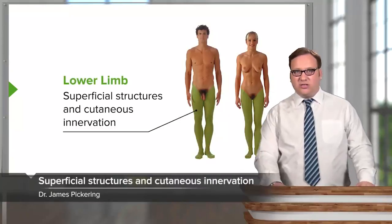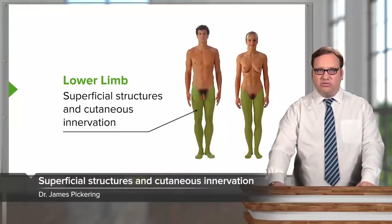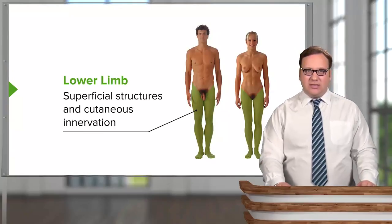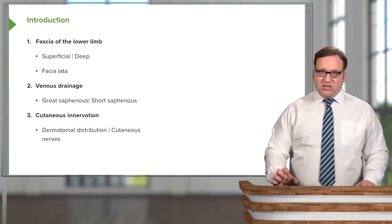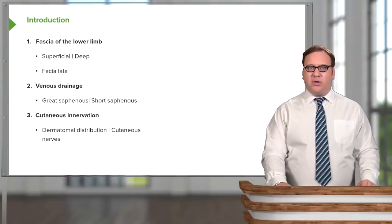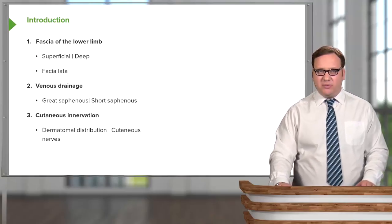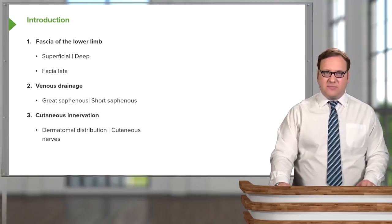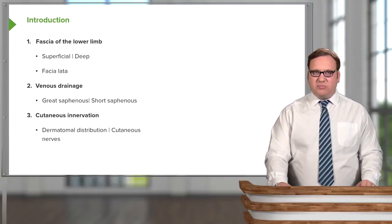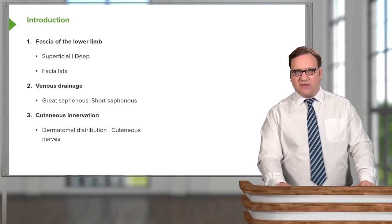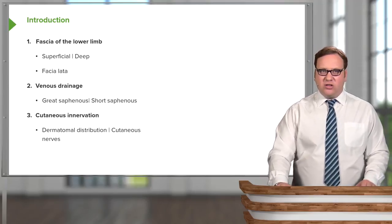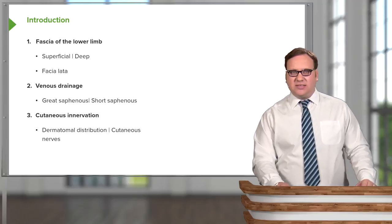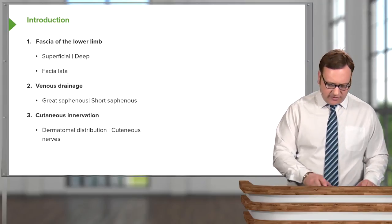In this lecture we're going to look at the superficial structures and cutaneous innervation of the lower limb. We're going to look at the fascia of the lower limb, both the superficial and deep, quite briefly, but we'll look specifically at the fascia later. We'll then look at the venous drainage by way of the great and short saphenous veins, and then we'll look at the cutaneous innervation, the dermatomal distribution and some important cutaneous nerves.